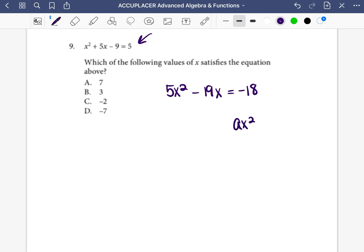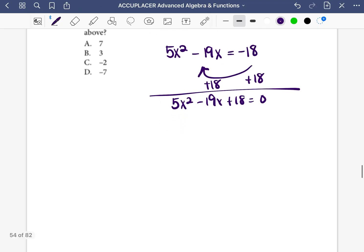Standard form is ax² + bx + c, usually set equal to zero. So we need to bring all the numbers to this side so that there's an equation in standard form set equal to zero. We move the 18 to the other side by adding 18 on both sides. So now we're left with 5x² - 19x + 18 = 0. So now we have to factor this.